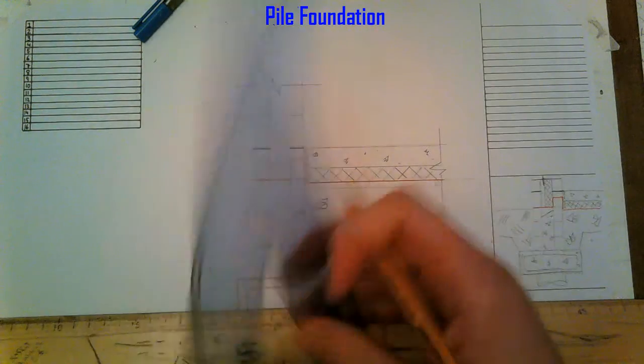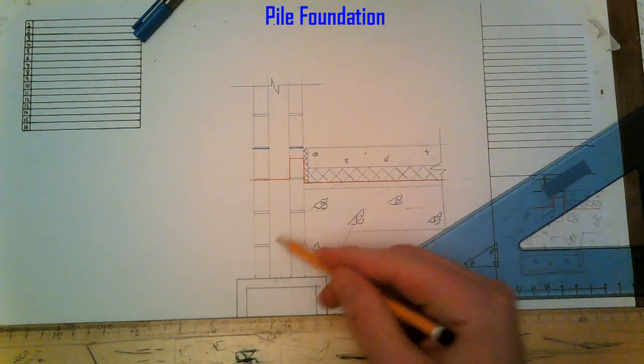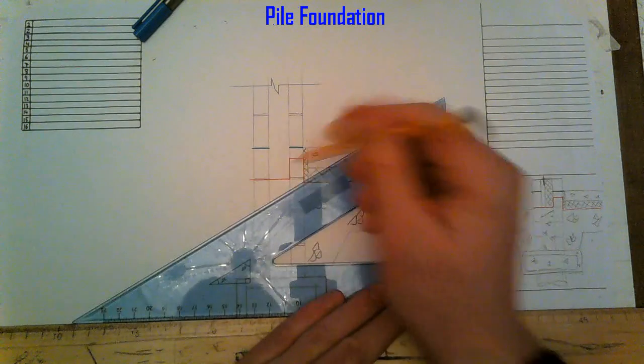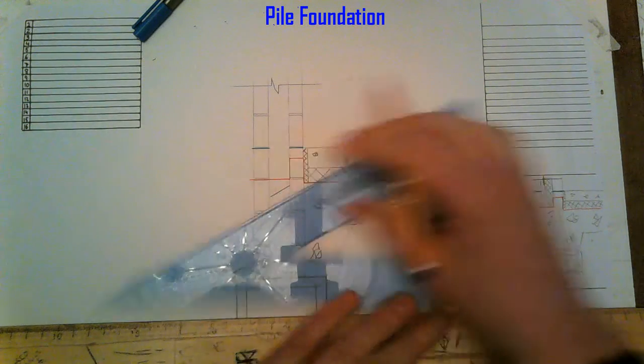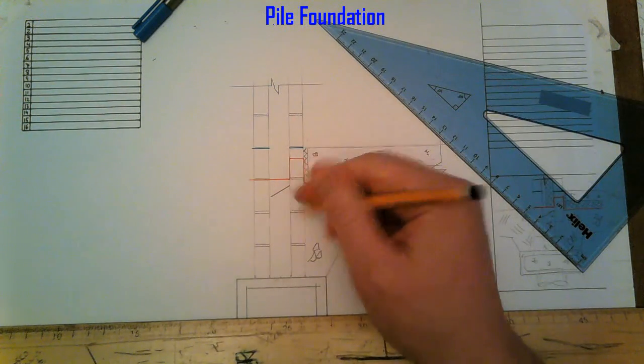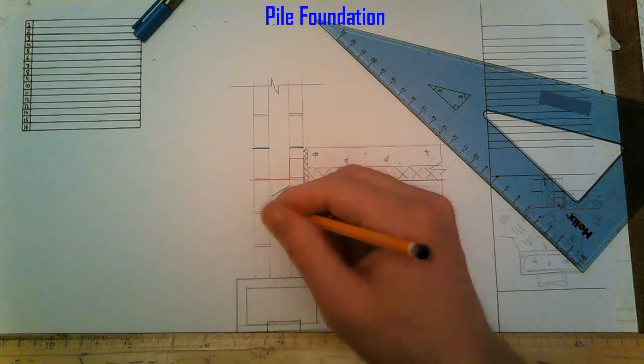So then in our cavity down here we have a concrete infill. Give it that bit of stability like in our strip foundation. So it just ties everything together here in our outer leaf.